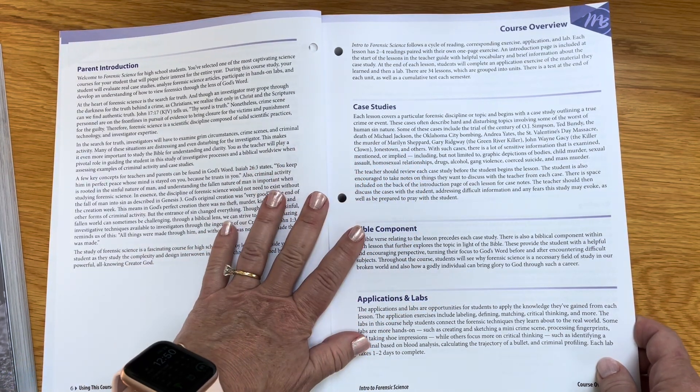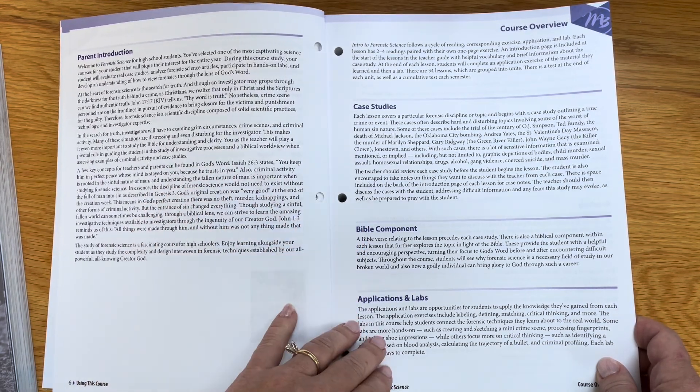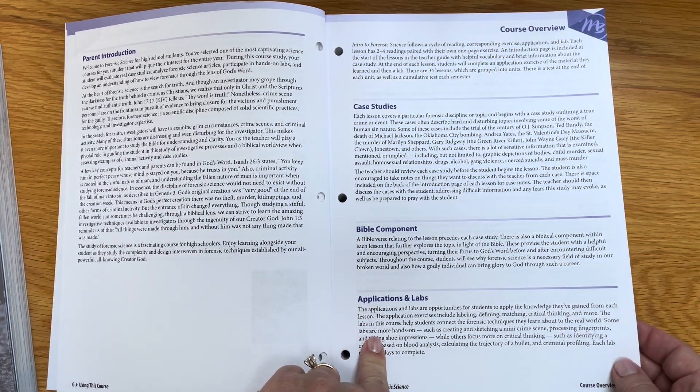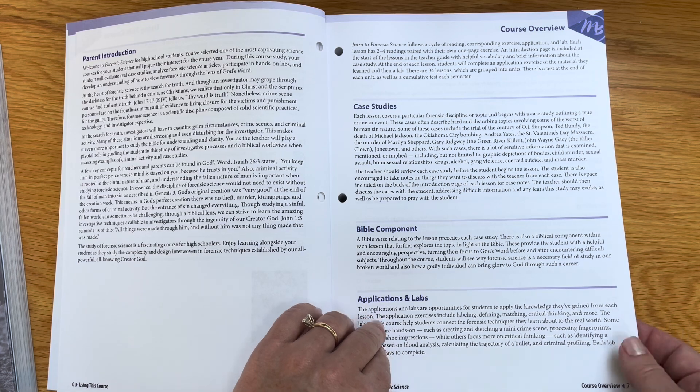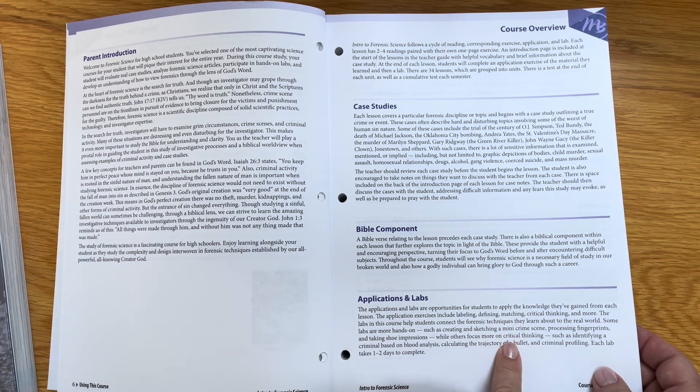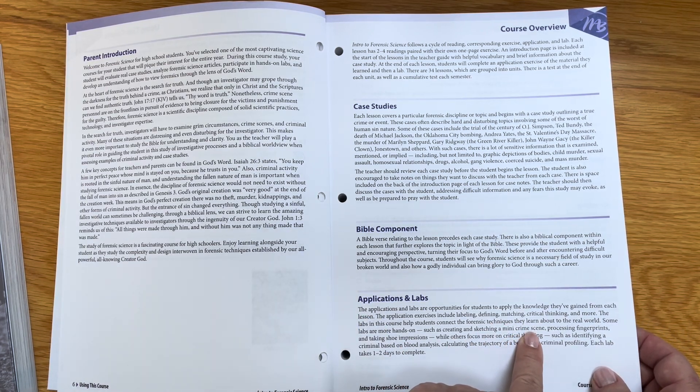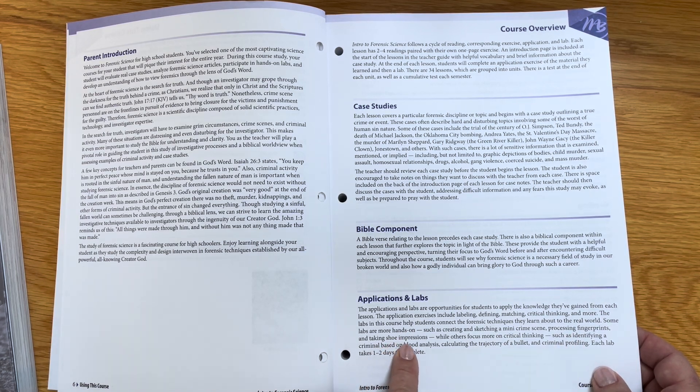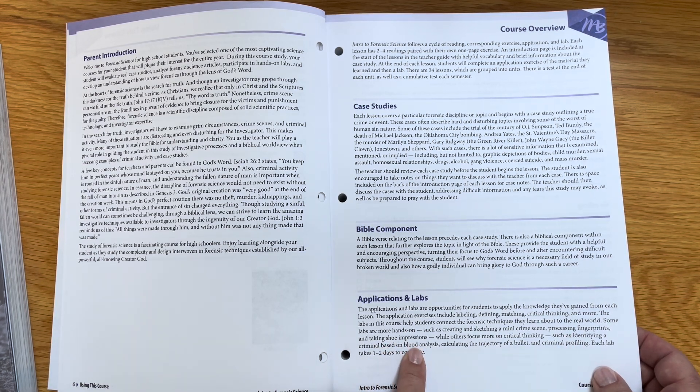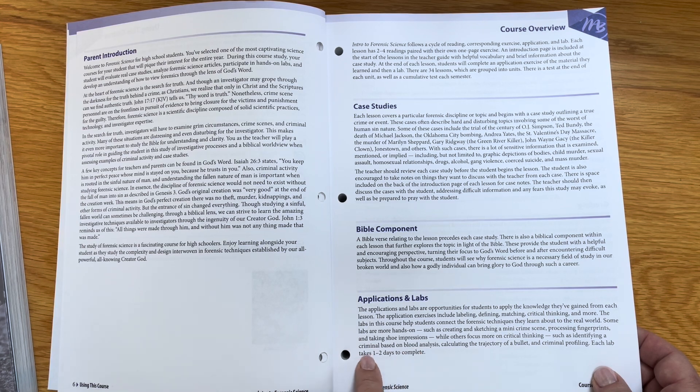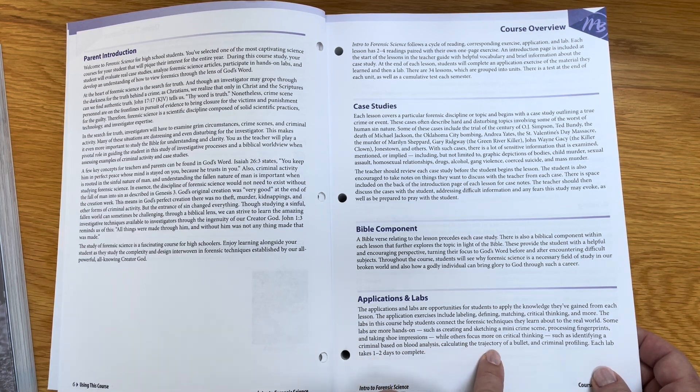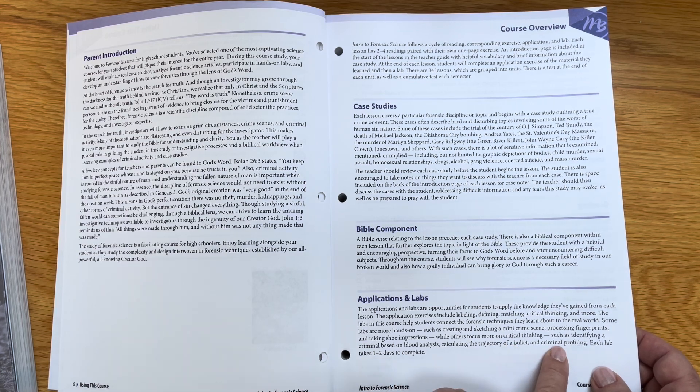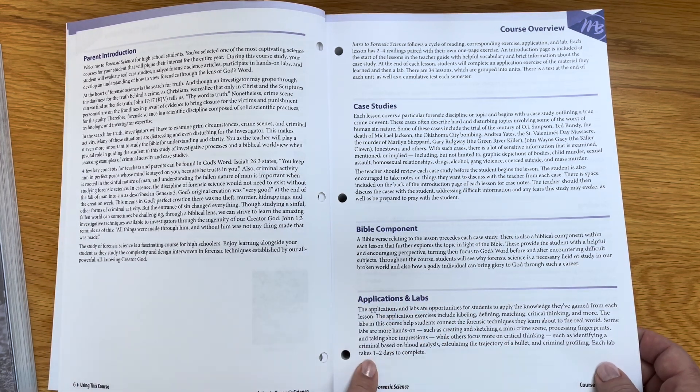There are labs included. Some of the things that they would be doing in their labs are sketching a mini crime scene, processing fingerprints, taking shoe impressions, identifying a criminal based on blood analysis, calculating the trajectory of a bullet, and criminal profiling. Each lab takes one to two days to complete.